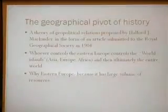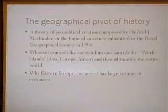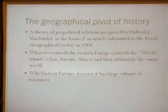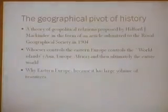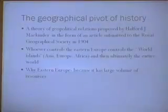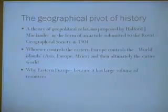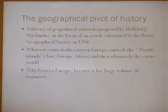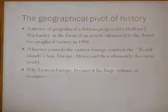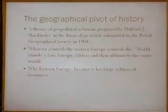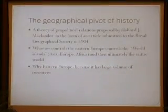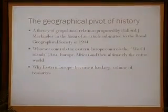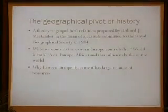What exactly is this theory all about? It's a theory of geopolitical relation proposed by Halford J. Mackinder in the form of an article titled 'The Geographical Pivot of History,' submitted to the Royal Geographical Society in 1904. It tells that whoever controls Eastern Europe controls the so-called 'world island,' which comprises Asia, Europe, and Africa, and ultimately the entire world. Why East Europe? Because it has a large volume of resources.